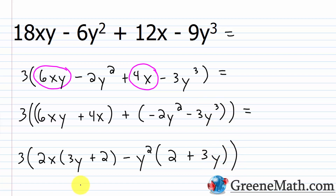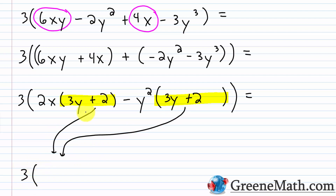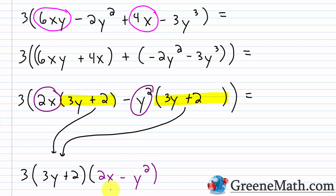We have 3y + 2 and 2 + 3y — these are the same thing. When we add, we can add in any order. So we do have a common binomial factor of (3y + 2). Factoring that out gives us 3(3y + 2)(2x - y²). So we've factored our four-term polynomial as 3 times the quantity (3y + 2) times the quantity (2x - y²).